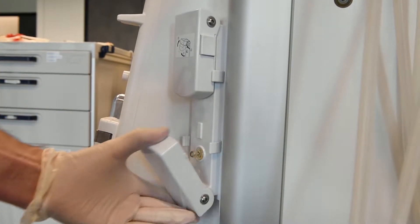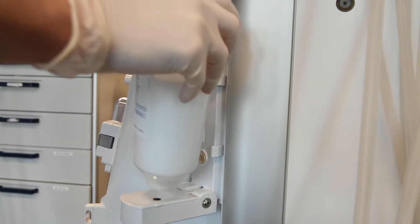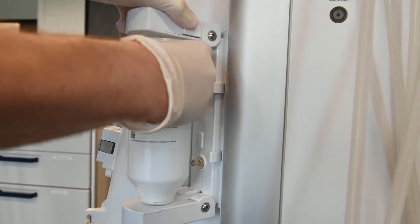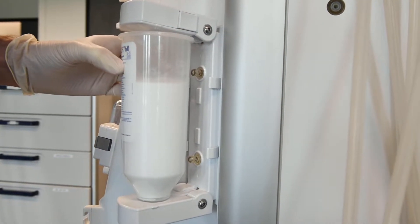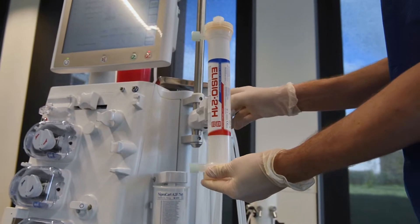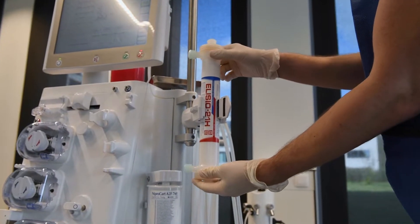Open the bicarbonate cartridge holder and insert the Nipro card. Connect the concentrate using the front suction rod or select central acid supply. Place the dialyzer in the dialyzer holder.